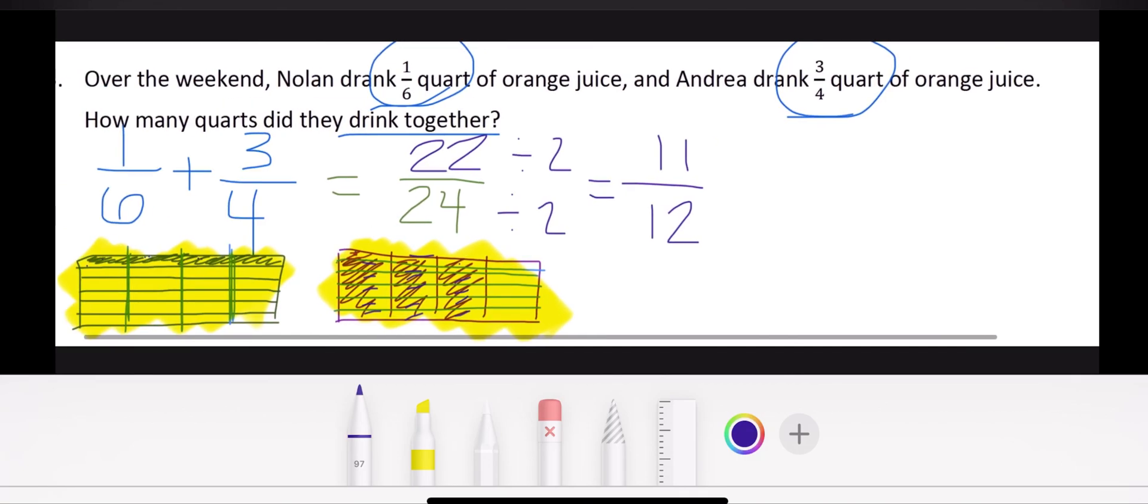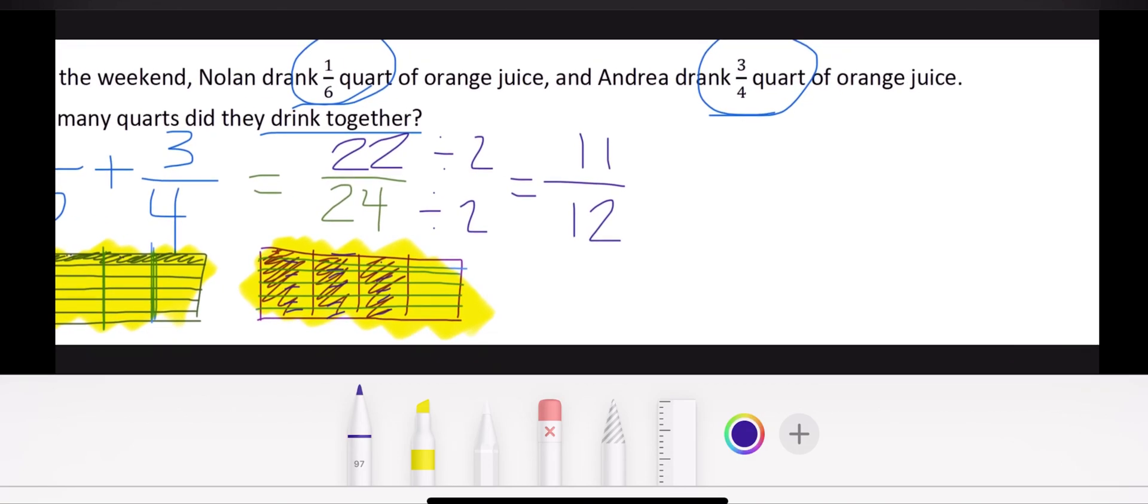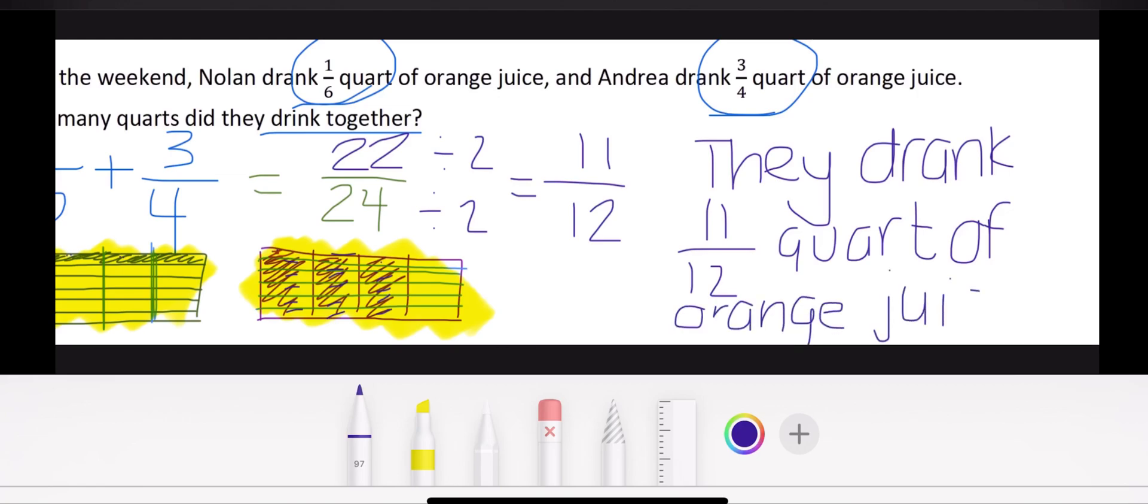So my last step is going to be to write out my sentence. So I'm going to say they drank 11/12 quart of orange juice. All right, there we go.